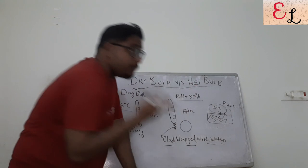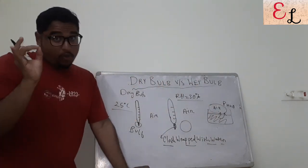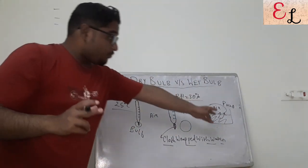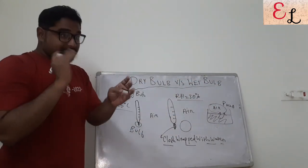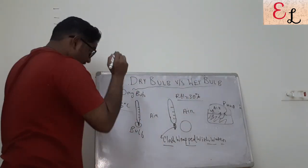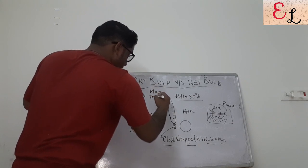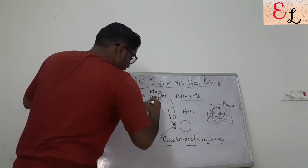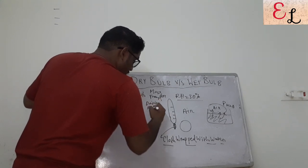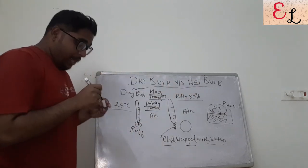This happens because the partial pressure of water vapor in the air is relatively lesser than the partial pressure of water in the liquid itself, since it's pure water and air contains very little water. Until the partial pressure on both sides — liquid and air — match each other, there is going to be a mass transfer driving force.